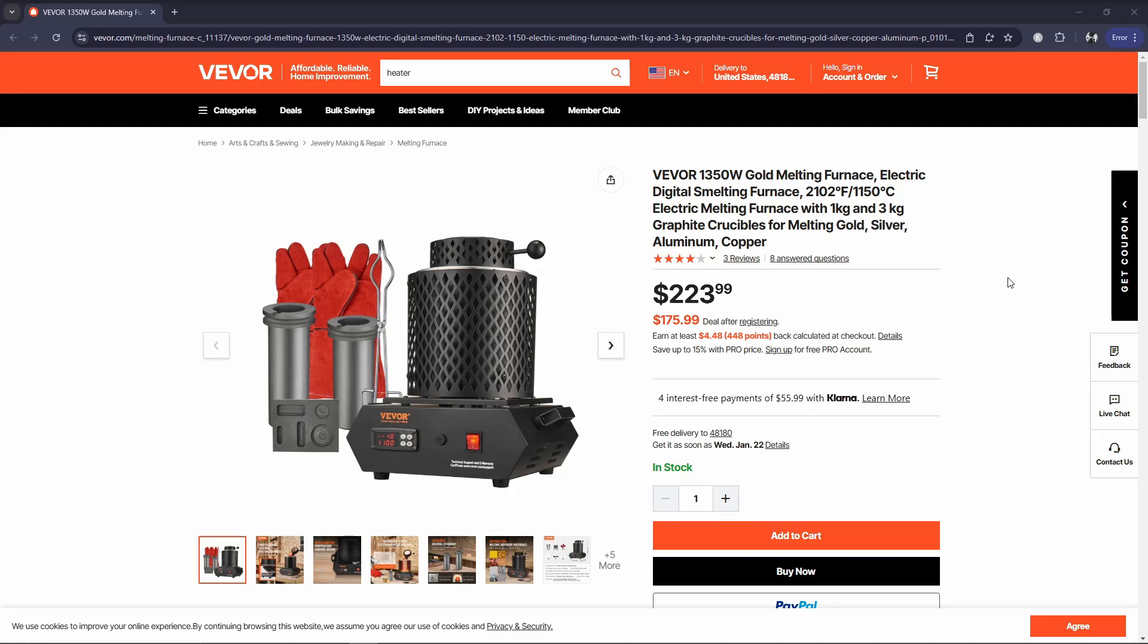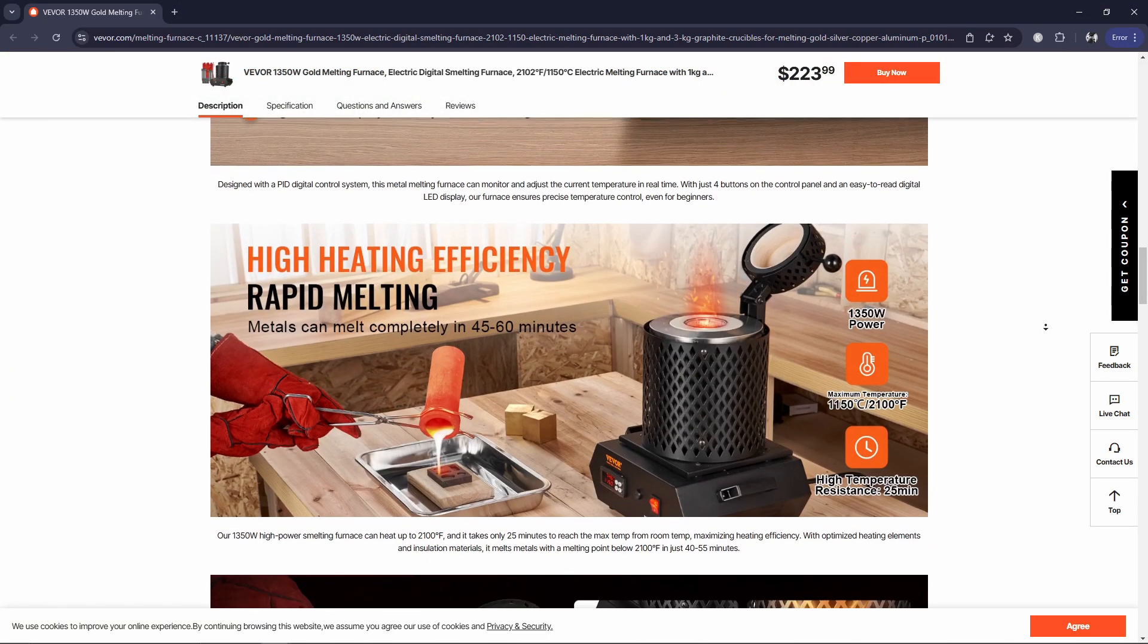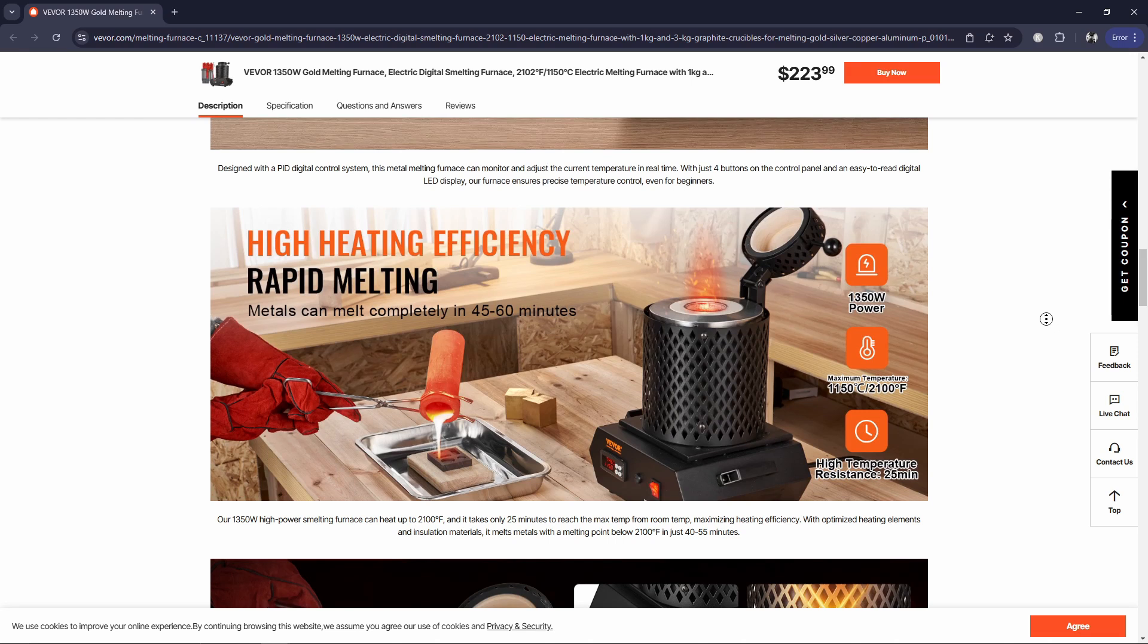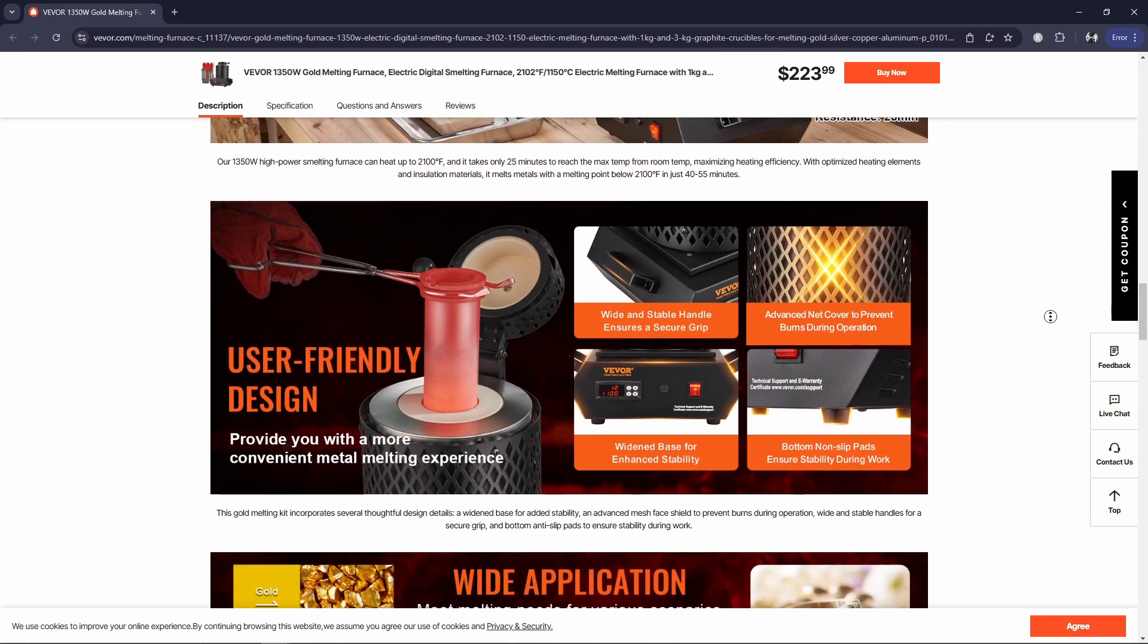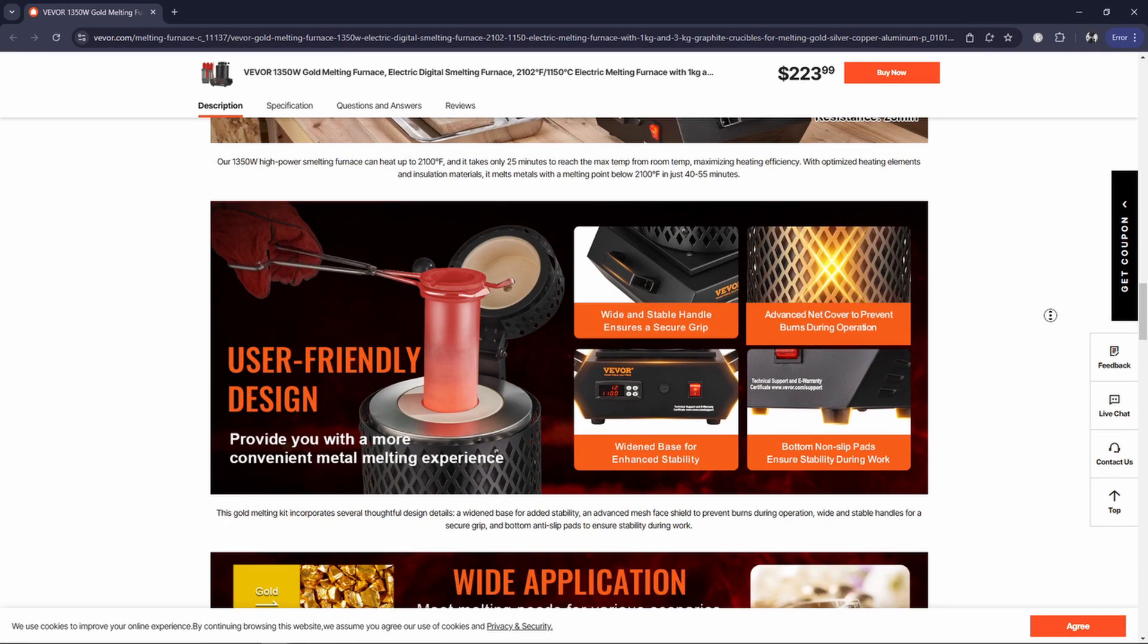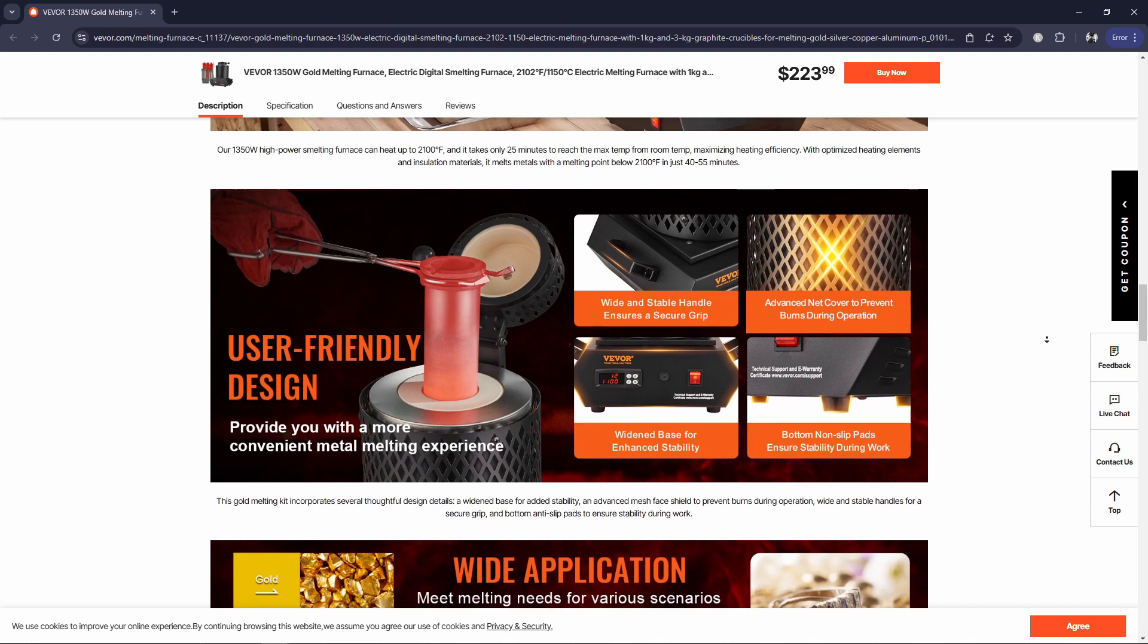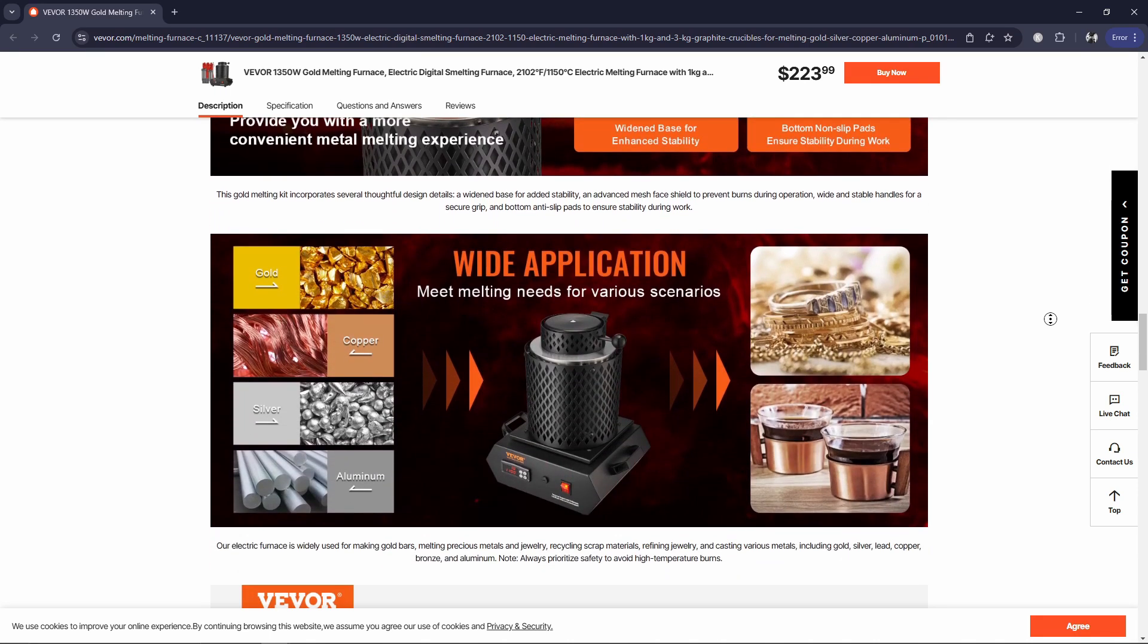This furnace comes in a kit and is listed for $223 US dollars on their website, and it has some similar capabilities to their old one, but it might actually be better for efficiency. It still hits that max temperature of 2100 degrees Fahrenheit, but it's only using 1350 watts instead of that 1750 watts like the old one. That max temp of 2100 degrees Fahrenheit should be great for most casting applications like gold, silver, aluminum, and bronze, but that's not quite going to be able to hit those higher temp metals like steel or iron.